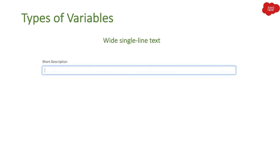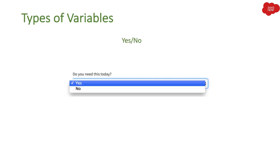Then we have Wide Single Line Text. Single Line Text has a character limitation, but if you want to increase that, you can select Wide Single Line Text — similar to a short description but wider. Finally, we have Yes and No. If you just want to capture input from the end user as a yes or no answer, you select the Yes and No variable type.